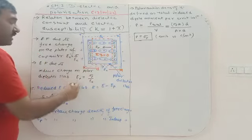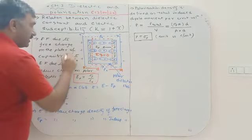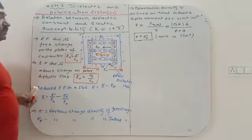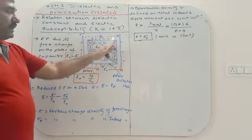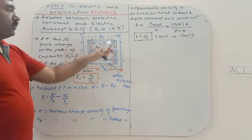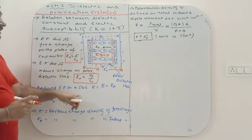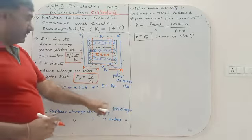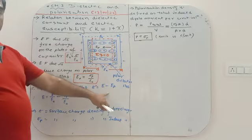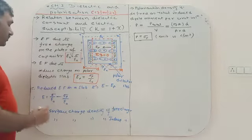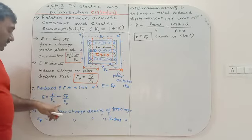The electric field due to free charges is E = σ/ε₀, and the electric field due to the induced (bound) charges on the dielectric slab is Eₚ = σₚ/ε₀. Since both fields act in opposite directions, the reduced electric field inside the slab is E' = E − Eₚ = σ/ε₀ − σₚ/ε₀.